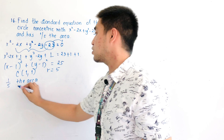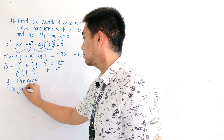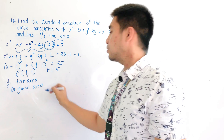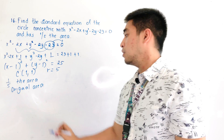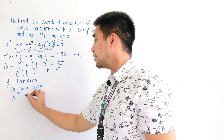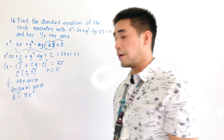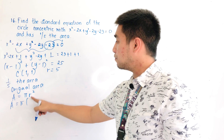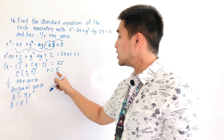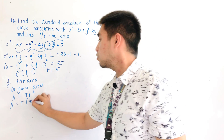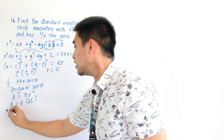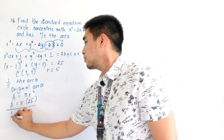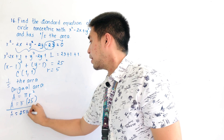Let us first compute the original area. The area formula is pi r squared. Area equals pi times 5 squared, which is pi times 25. Therefore, the original area is 25 pi.